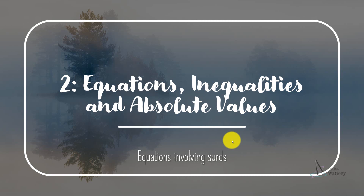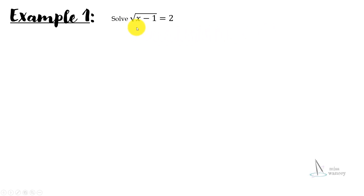This is the second video on equations involving surds. Let's proceed to the first example: solve the square root of x minus 1 equal to 2. When you have a surd, what you need to do is square both sides.